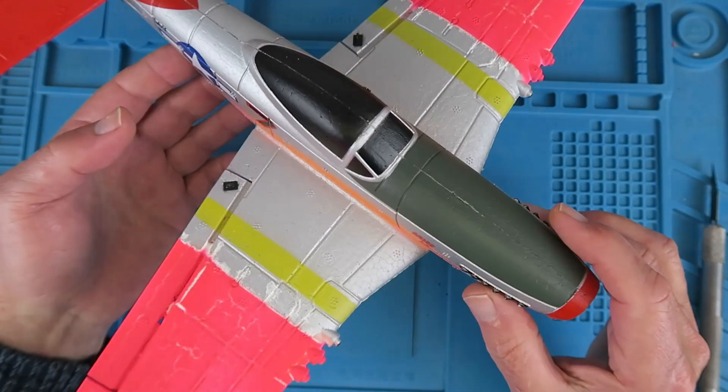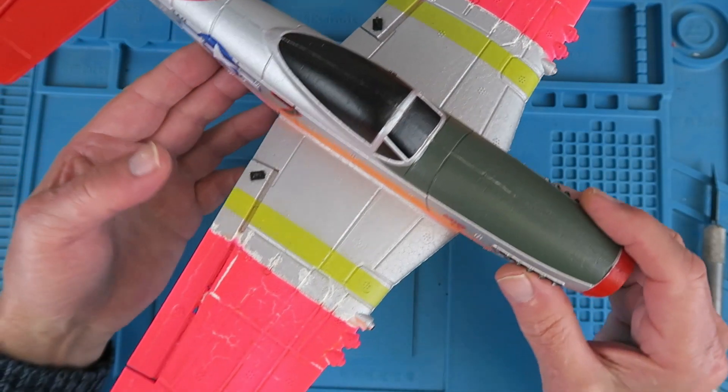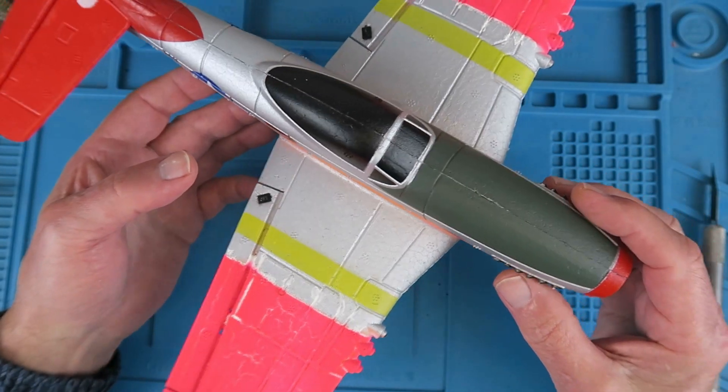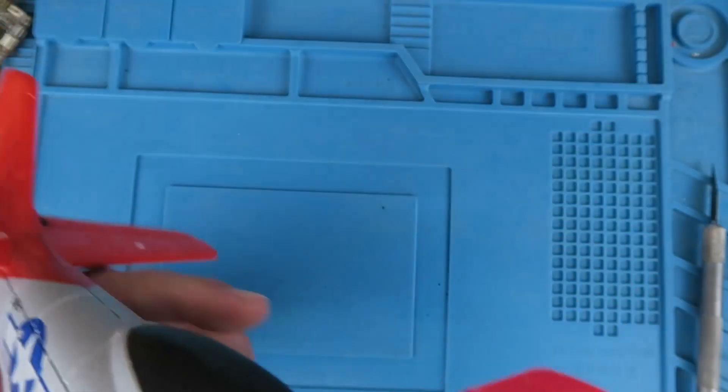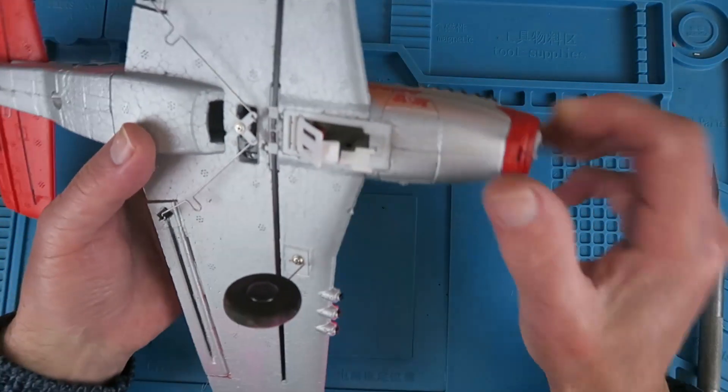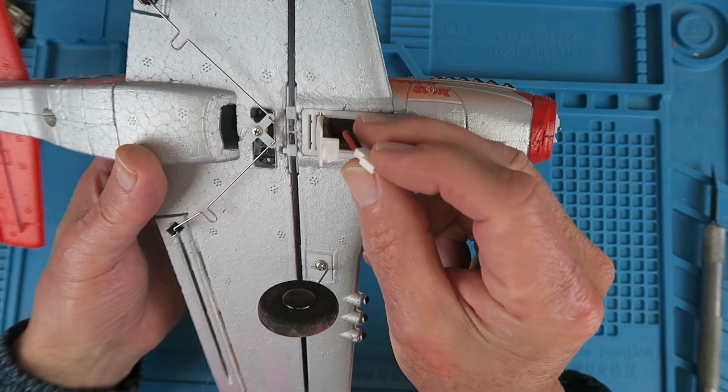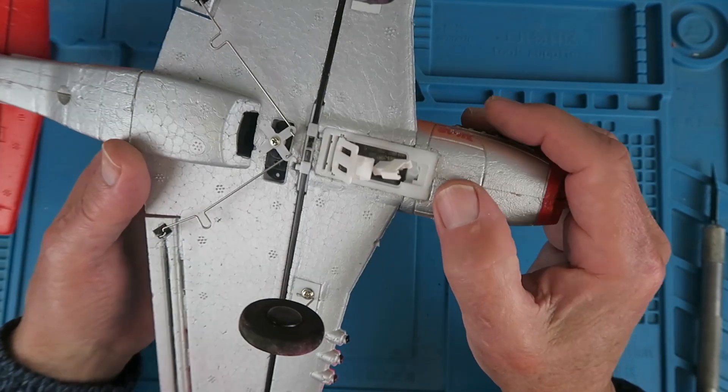This rather snazzy looking EA Sheen P51, custom paint job by one of the guys in the club. Unfortunately, he managed to plug the battery in backwards. That's too easily done with these little types of connectors. Unfortunately, it's let the magic smoke out.